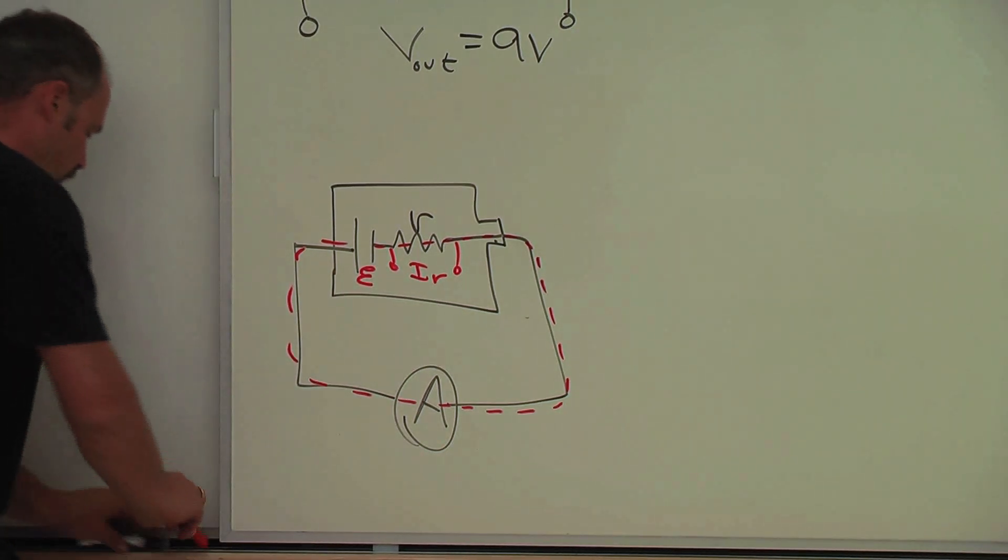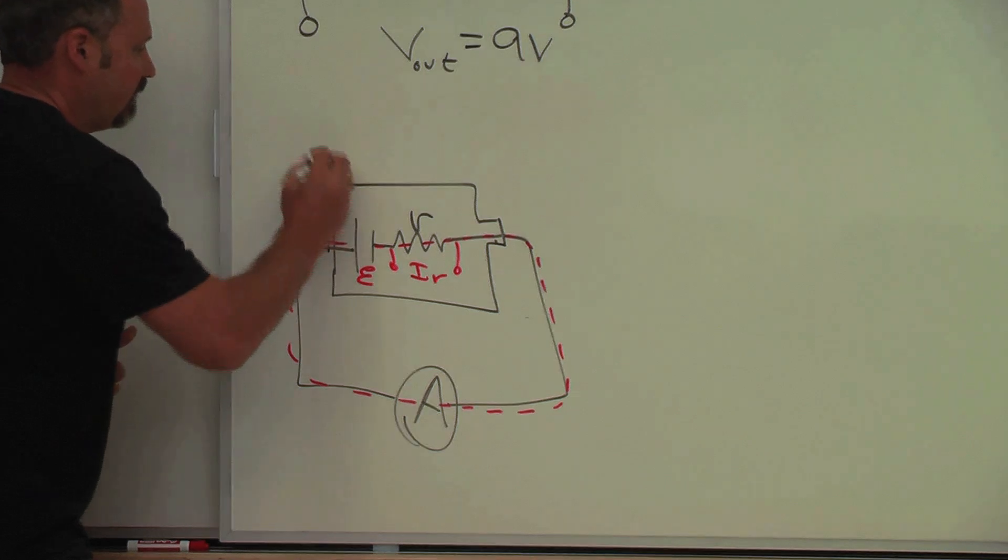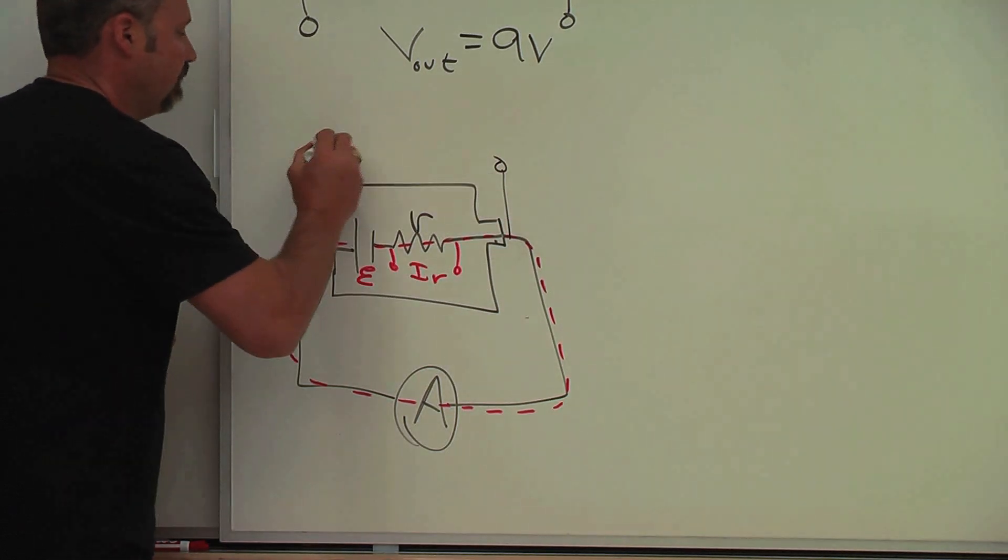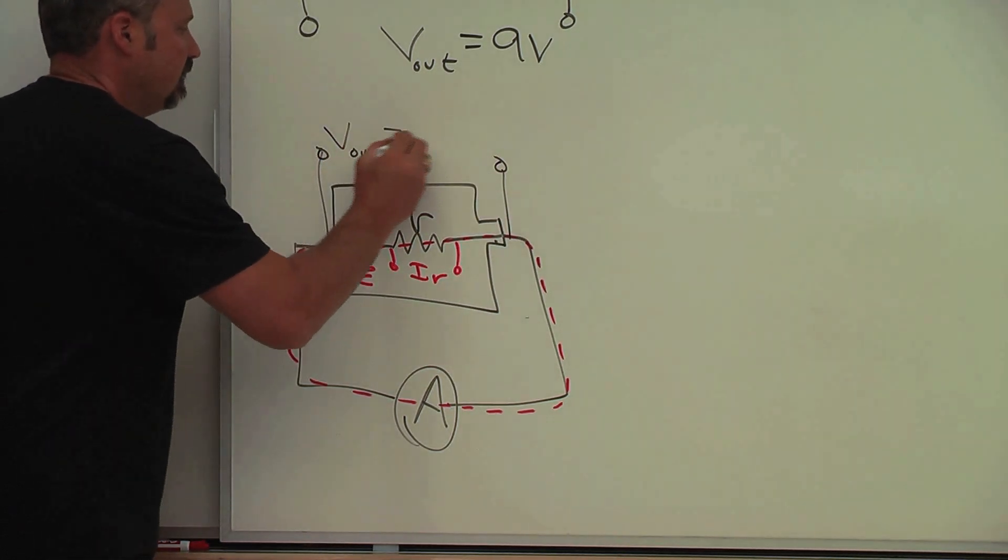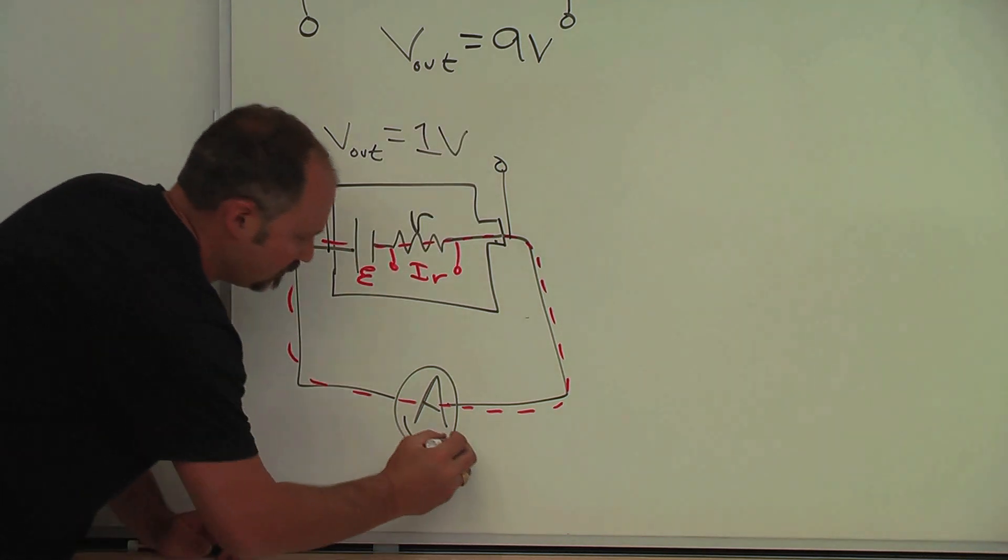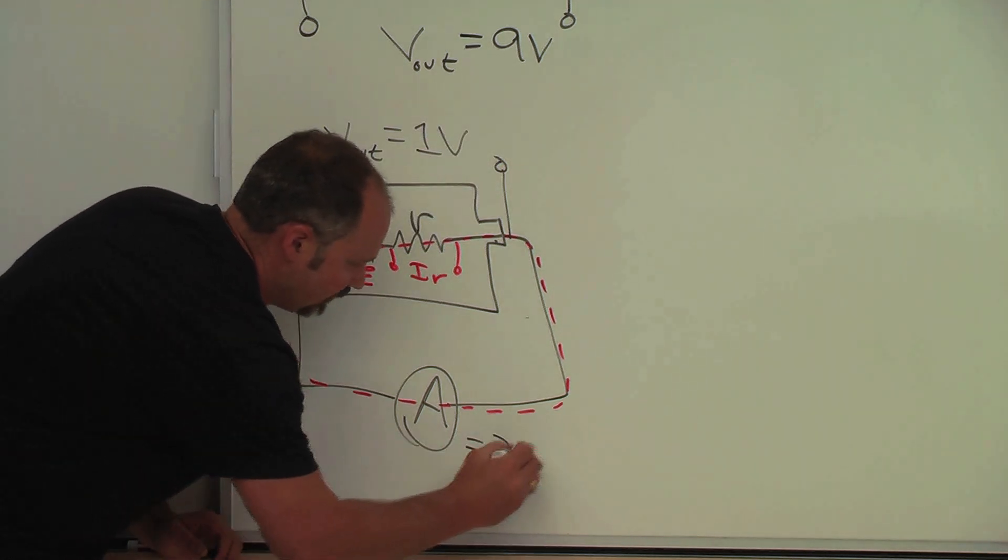and therefore we get a voltage drop of IR here. And I guess I should write our numbers. When we measure, well, we measure here, in this case we measure the out voltage to be 1 volt, and the ammeter was equal to 2 amps.